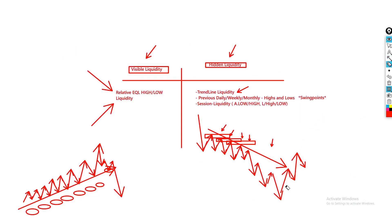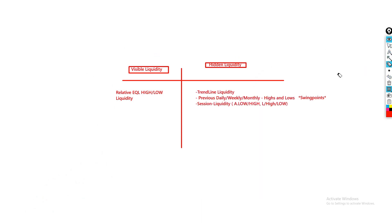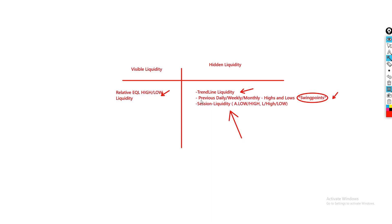That's pretty much all the different types of liquidity explained. We talked about visible liquidity — relative equal highs and lows. We explained trendline liquidity. We explained major swing point liquidity based on daily, weekly, and monthly levels. And we covered session liquidity — Asia, London, and New York highs and lows. Now finally, let's move on to how to use this knowledge to our advantage, even though I've already touched on it.